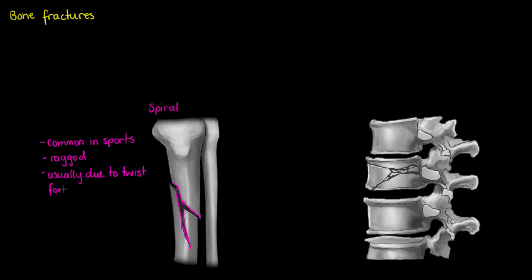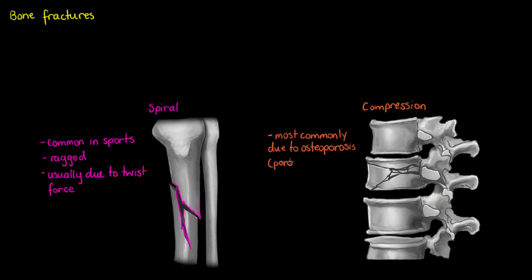The next common fracture, demonstrated here in the spine, is called a compression fracture. This is most often due to osteoporosis, a disease in which bone resorption overtakes bone deposition. This results in the bone being brittle and unable to withstand the same forces it usually could endure. Despite osteoporosis, a rather severe fall or injury is usually required for this fracture to occur — so a crushing force.